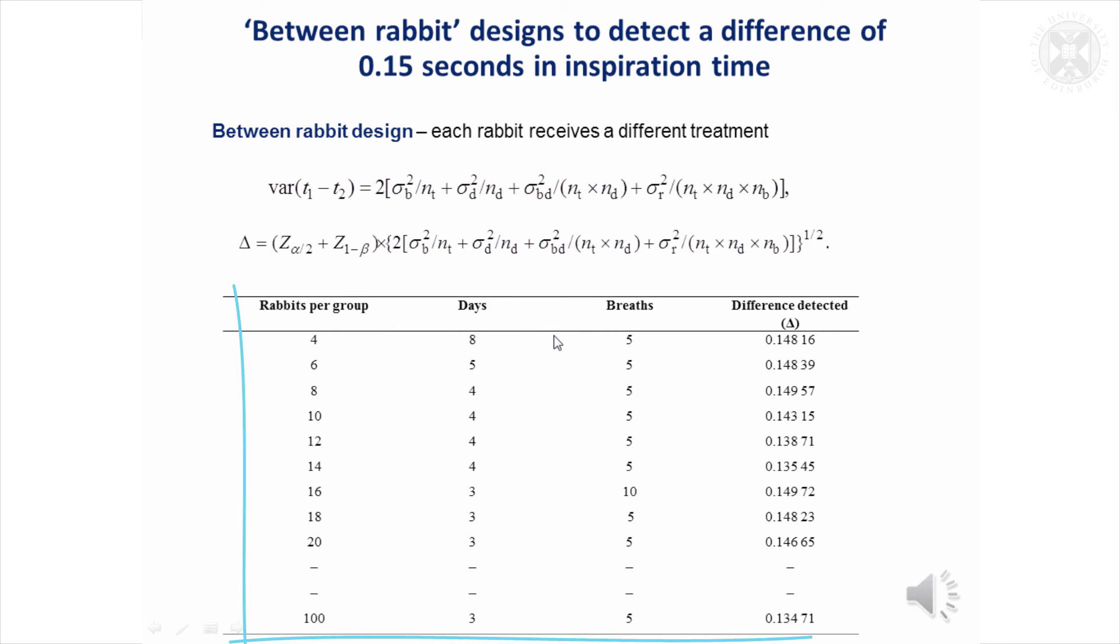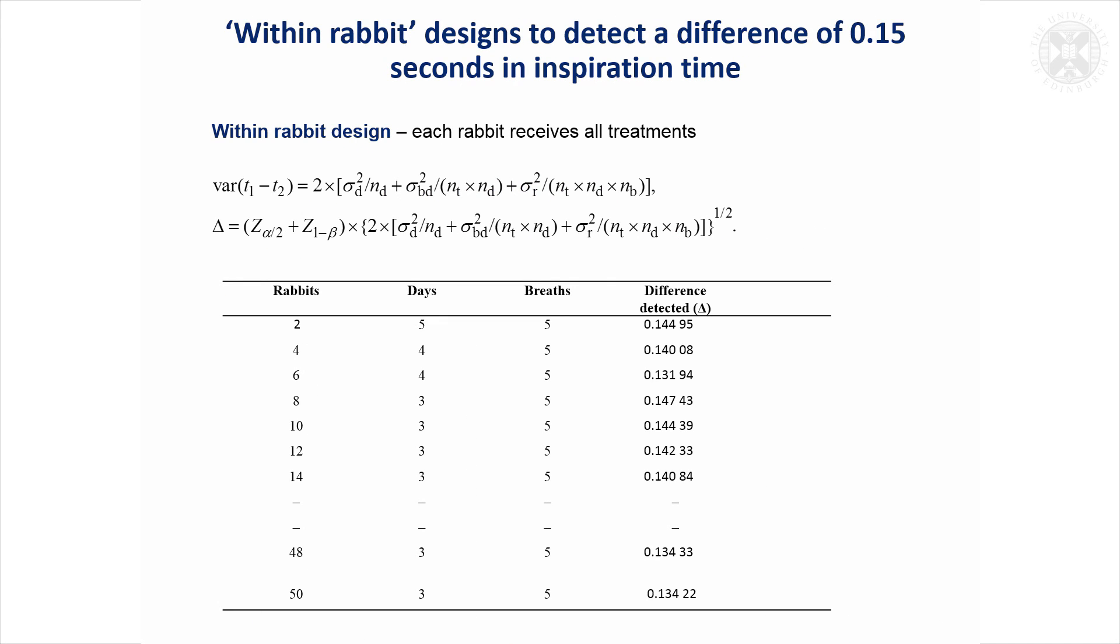So it gave a range of possible designs for the future study. Probably, I don't know which one they went for, but probably more days and fewer rabbits would be possibly preferable. An alternative design that could be thought about from using these variance components is a within-rabbit design, where it's possible to give the rabbits different treatments at different times, and that would make the analysis more sensitive.